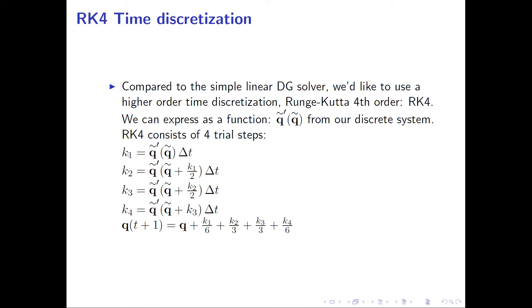We use this value and the successive value to estimate what the new potential coefficient variables would be. We repeat this several times such that we're able to get four terms, each a potential trial step.